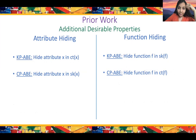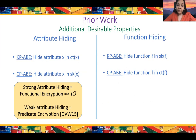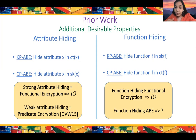Regarding additional properties: for strong attribute hiding, ABE becomes equivalent to functional encryption, which in turn implies indistinguishability obfuscation. For weak attribute hiding—called predicate encryption—we have a construction for all circuits from learning with errors. For function hiding, we know that function hiding functional encryption implies IO. But for function hiding ABE specifically, we don't know anything yet, so constructions are presumably still possible.